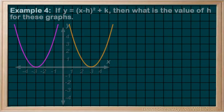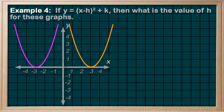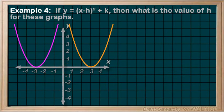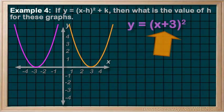For our last example, Example 4, we look at it a little bit differently. If y equals (x - h)² + k, then what is the value of h for these graphs? Well, for the first graph here, we can see that it's shifted left by 3. And we remember that to shift a graph left by 3, that means we want a plus 3 in with the x.